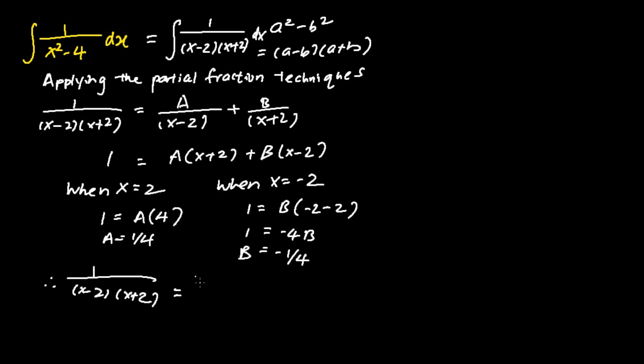Therefore, 1 over (x minus 2)(x plus 2) equals 1 over 4(x minus 2) minus 1 over 4(x plus 2).